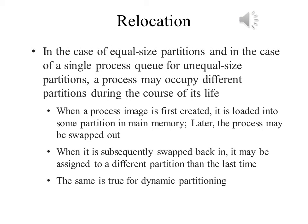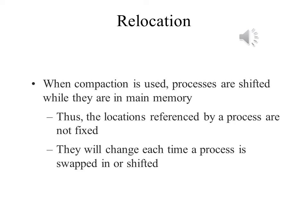In the case of equal-sized partitions, and in the case of a single process queue for unequal-sized partitions, a process may occupy different partitions during the course of its life. When a process image is first created, it is loaded into some partition in main memory. Later, the process may be swapped out, and when it is subsequently swapped back in, it may be assigned to a different partition than the last time. The same is true for dynamic partitioning. Furthermore, when compaction is used, processes are shifted while they are in main memory, so the locations of instructions and data referenced by a process are not fixed.